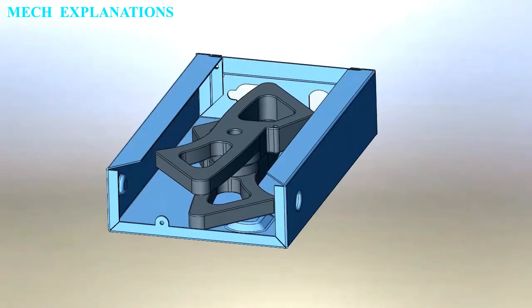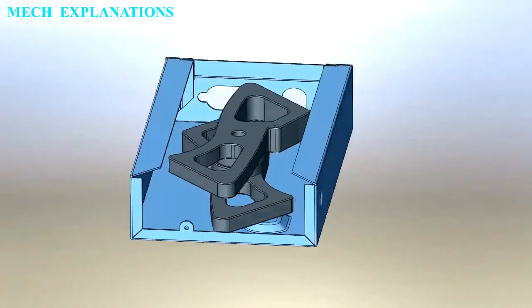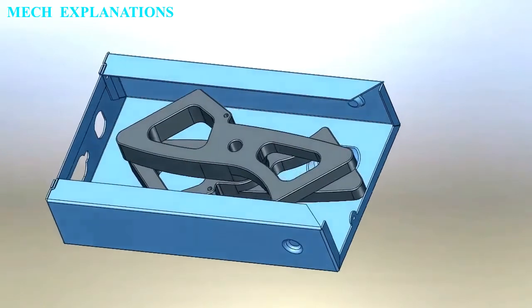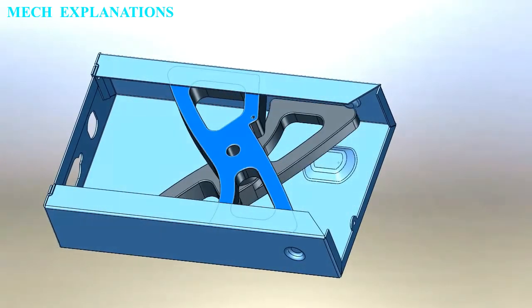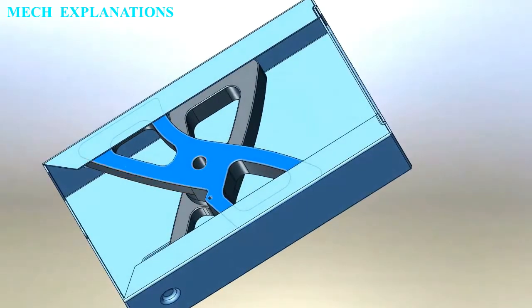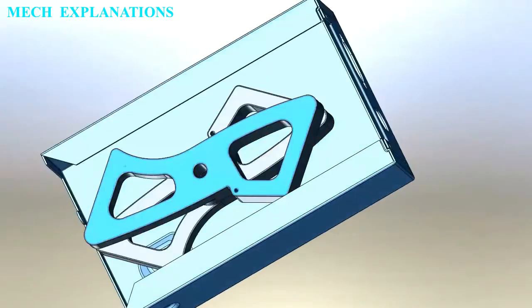A jig is often confused with a fixture. A fixture holds the work in a fixed location. A device that does both functions, holding the work and guiding a tool, is called a jig.